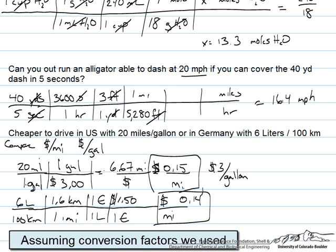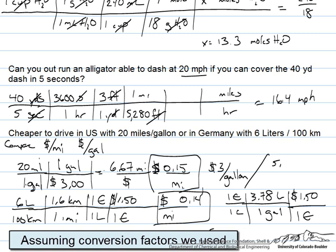But if we wanted to check to see what it was on a volume basis. 1 euro over 1 liter using our dimensional equation 3.78 liters per 1 gallon. And then again the price conversion of 1.50 per euro. And if you calculate this out what you will see is that the price of gas is about 5.7 dollars per gallon.